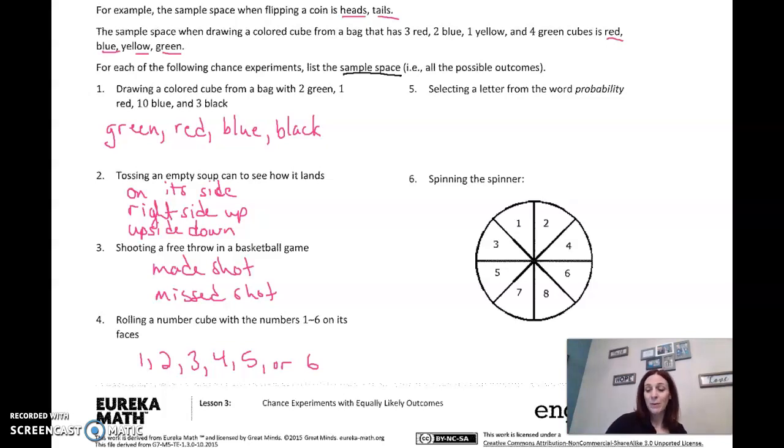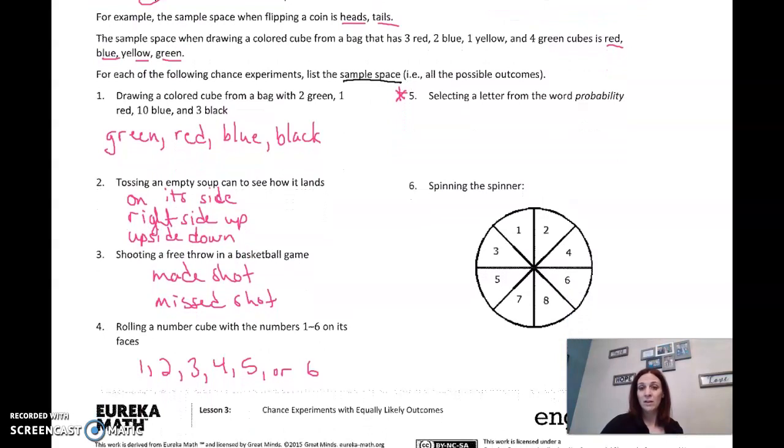What about up here on number five, the word probability? What are the possible outcomes? Now, pay very close attention to this one. If I just selected one of the letters out, I could select P, or R, or O, or B, or A. Do I write B again? B is already right here. So you don't have to write B again because it's already there. So an I is next, an L. Don't write I because you've already written it once. We don't want repeats. The sample set is just what possible outcomes. Even though there's two I's, we don't write it twice. There was ten blue—we didn't write the word blue ten times. And then we have T and Y. That's why I said pay attention to this one. No repeats.